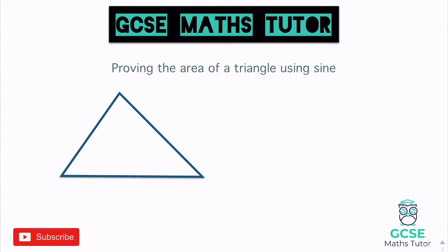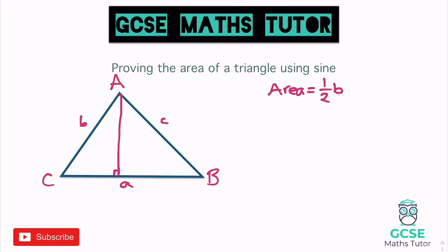Now proving the area of a triangle using sine. I'm labeling this triangle with the base as little a and the top angle as big A, then b and little b, and C and little c. I'll split this triangle into two right-angle triangles using the height again. We know the standard area formula is half base times height — area = ½ × base × height — without any trigonometry.